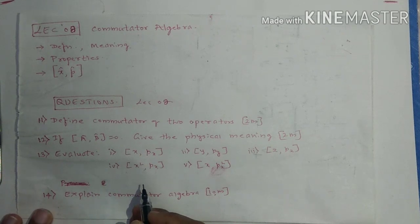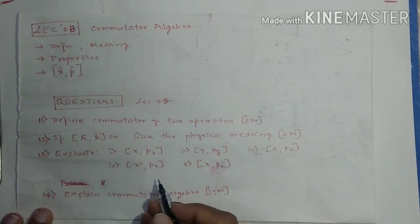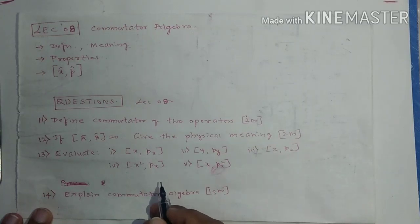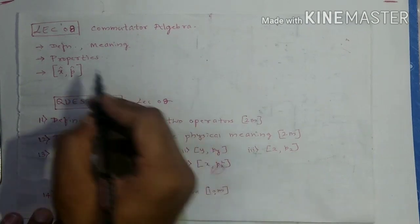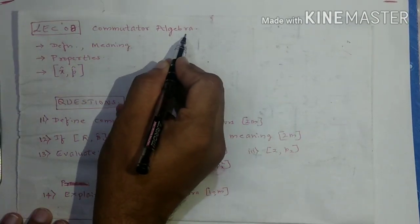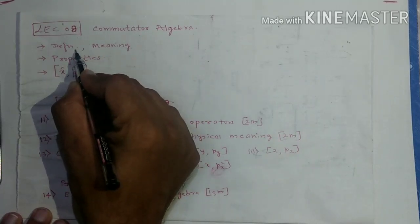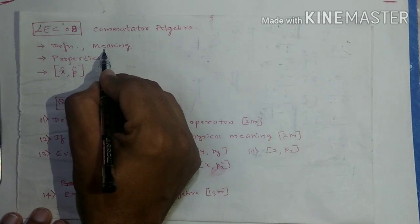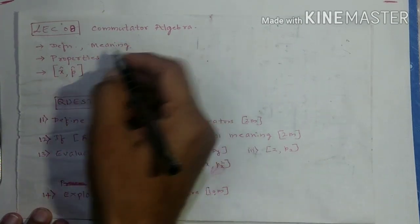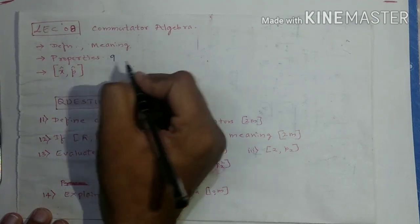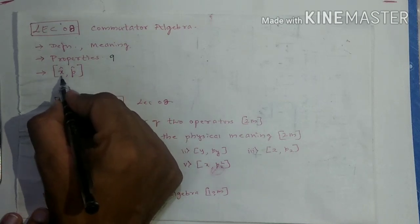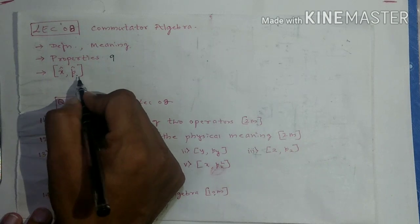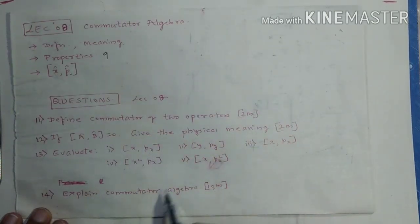Hello students, welcome to lecture number 8 of quantum mechanics. Due to some technical problems, I am deviating from the usual whiteboard method. The topic of this lecture is commutator algebra. We will first see the definition, then the meaning, then around nine properties of commutator algebra, and we will solve some commutator brackets involving X and P, that is position and momentum.